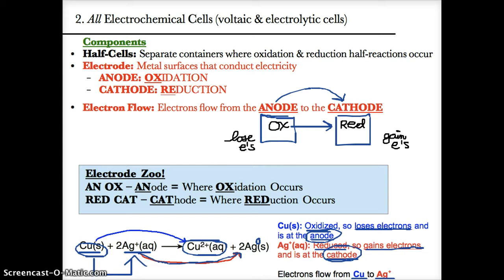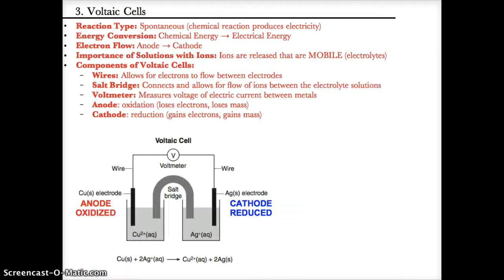So electrons flow from Cu, the anode where oxidation occurs, to Ag⁺, the cathode where reduction occurs. To determine which is the anode and which is the cathode, use 'anox and a red cat' — whichever is oxidized is the anode, and whichever is reduced is the cathode.